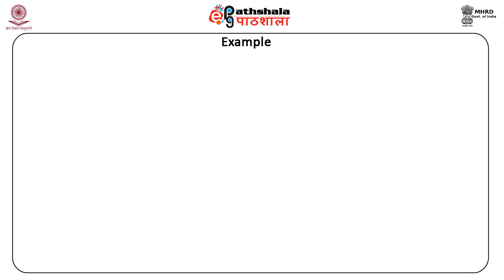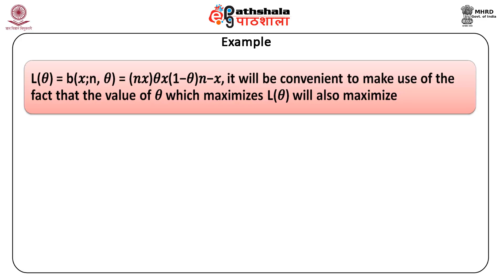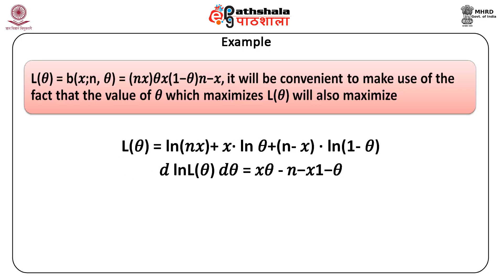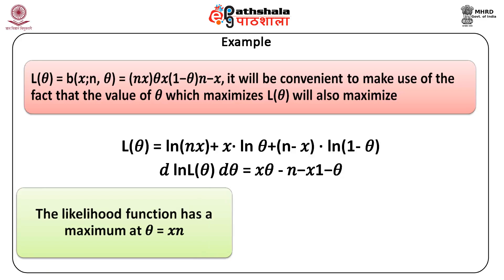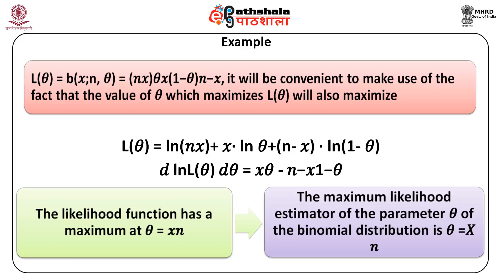Example 3: Given X successes in N trials, find the maximum likelihood estimator of the parameter theta of the binomial distribution. We maximize L(theta) = B(X, N, theta) = C(N,X) * theta^X * (1-theta)^(N-X). It is convenient to maximize log L(theta) = log C(N,X) + X*log(theta) + (N-X)*log(1-theta). Taking d(log L)/d(theta) = X/theta - (N-X)/(1-theta), setting this equal to 0 and solving gives theta = X/N. Hence the maximum likelihood estimator of theta is X/N.